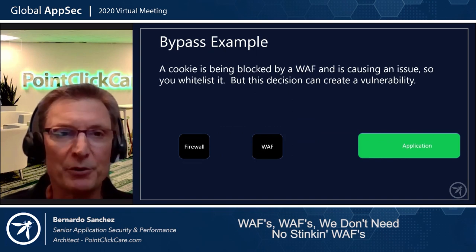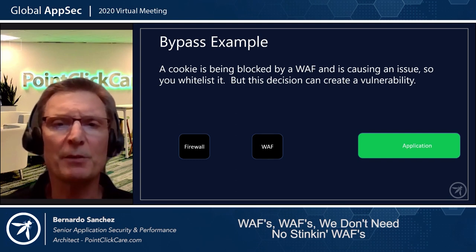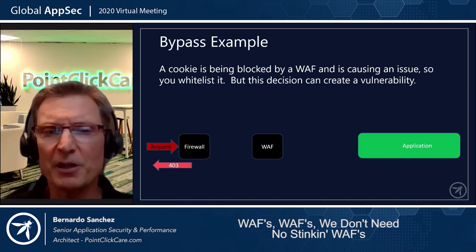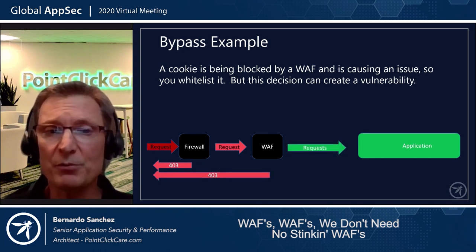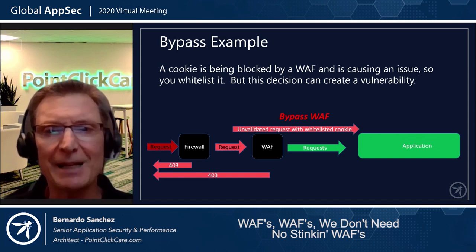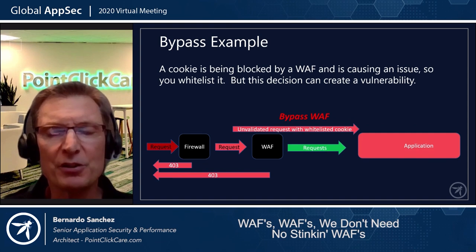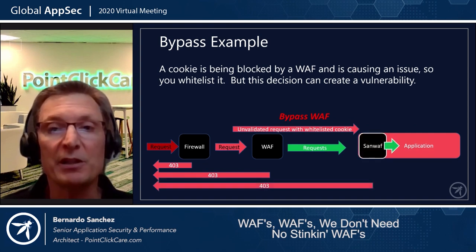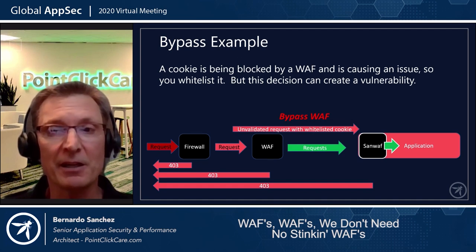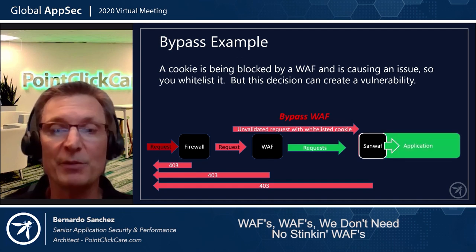Let's take a look at the bypass example. Say you have a cookie being blocked by the WAF, causing an issue, so you decide to whitelist it. Does this decision create a vulnerability? A request comes into a firewall, passes the rules, gets proxied to the WAF. If the request is valid, everything looks green. However, since you whitelisted a cookie, you've introduced unvalidated data into your application, turning it red. With SANWAF, you can configure it to inspect that cookie and make sure it's valid, turning your application back to green — making it secure.